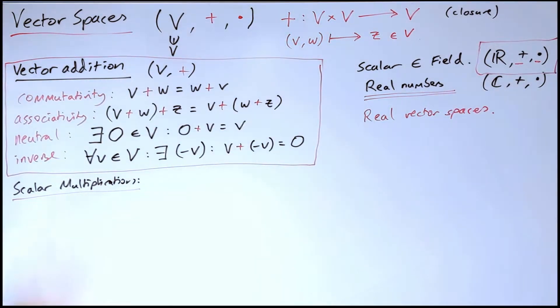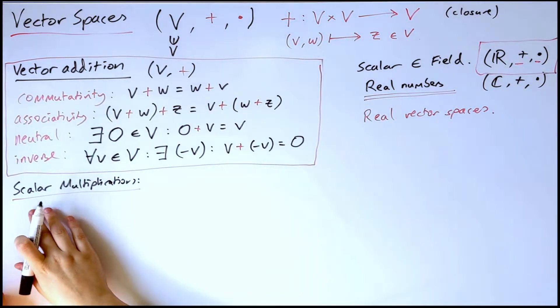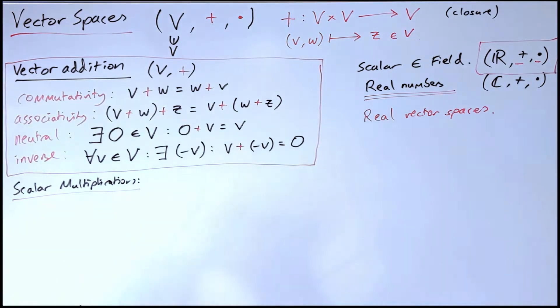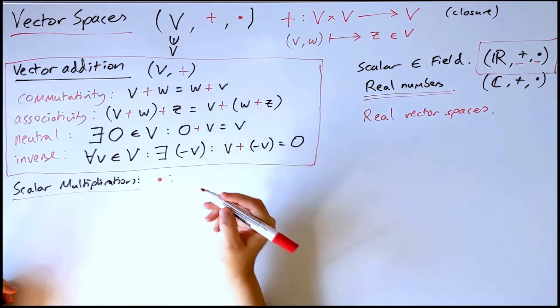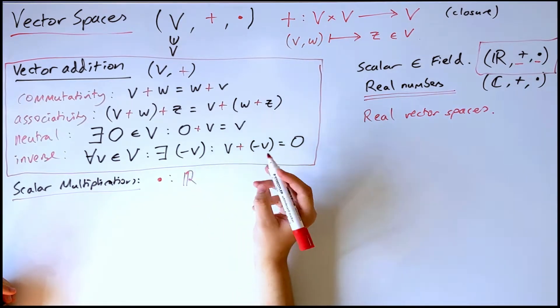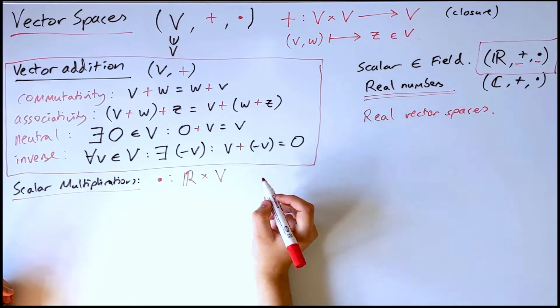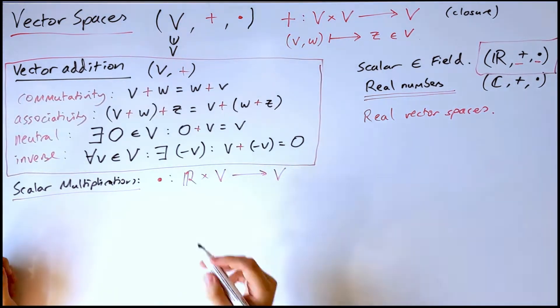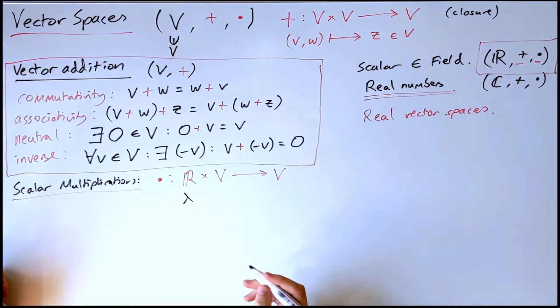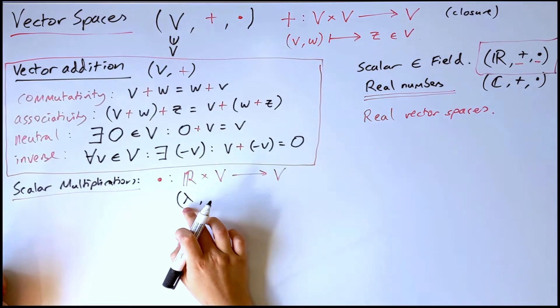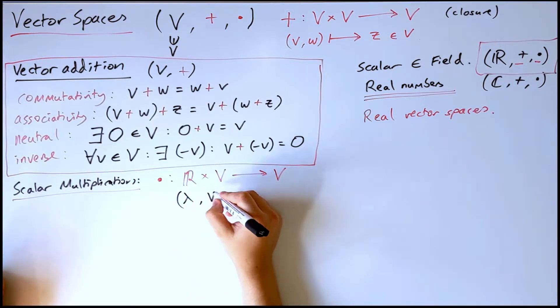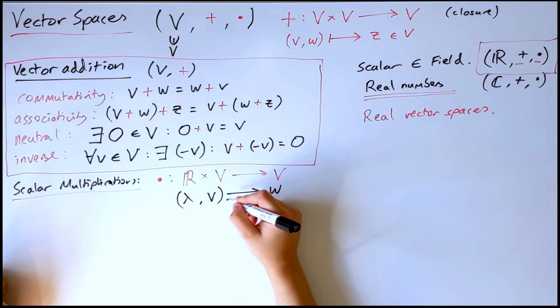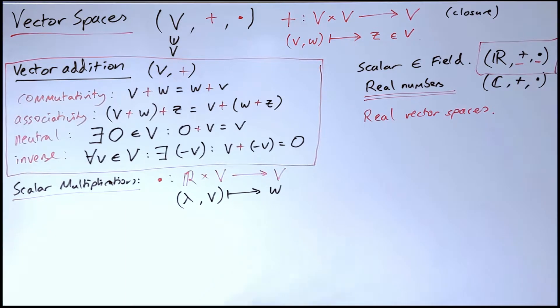So what do we mean by this, and why do we need a field? Well, we need a field in order to define the scalar multiplication operation. So scalar multiplication, this dot operation, is a map that takes an element from the field and an element from the vector space, and returns you an element in the vector space. So if I call the field element lambda, lambda, and you take some lambda, a scalar from the field, some vector from the vector space, and you're given another vector in the vector space.